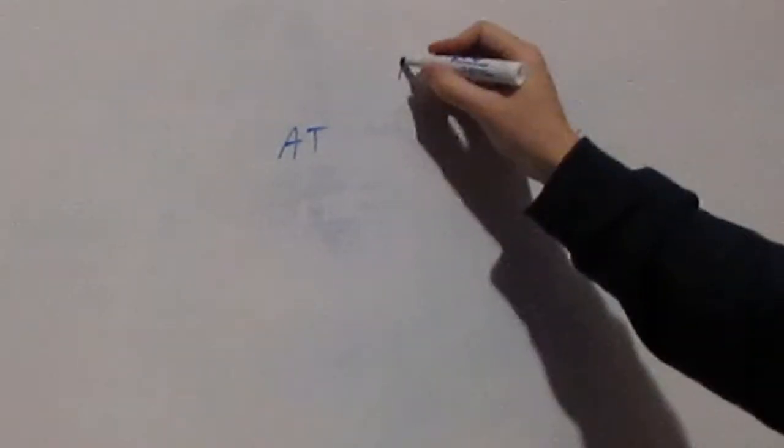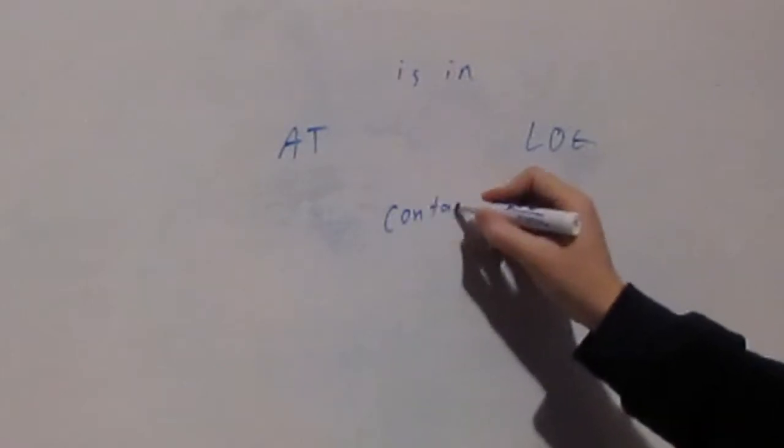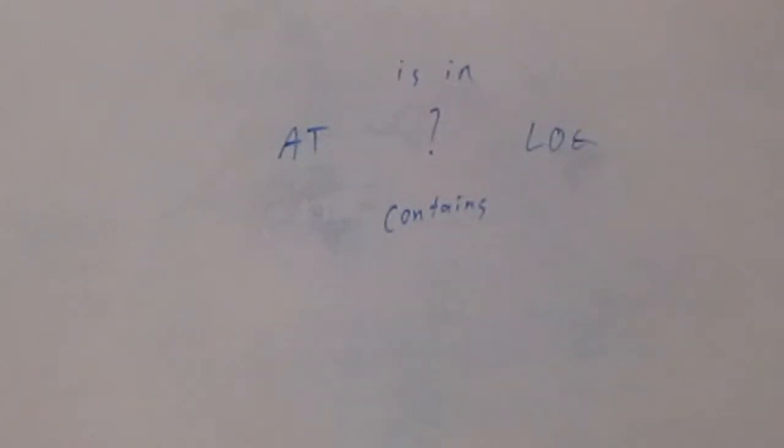But some words in this graph are not related. So take a look at the word at and the word log. Can you say that at isin log? Or could you say that at contains log? No, neither one of these are true. So these two words are not ordered under the isin contains relation. That means the isin contains relation is a partial order.